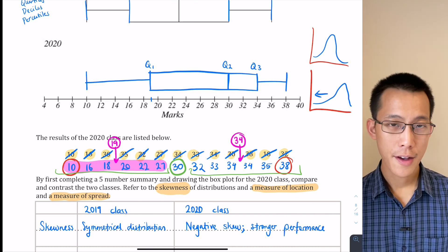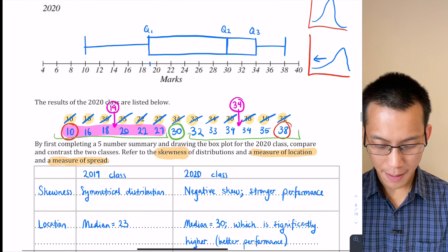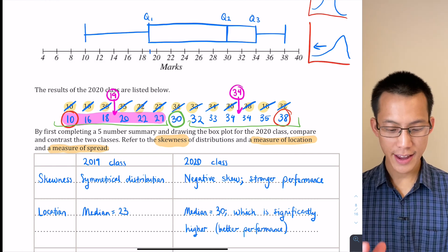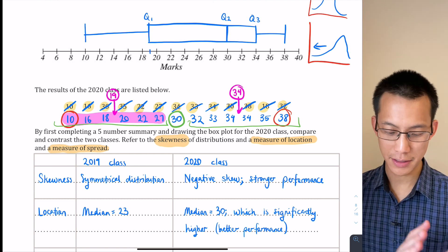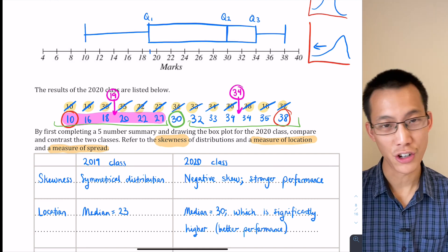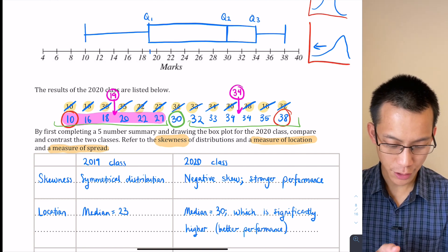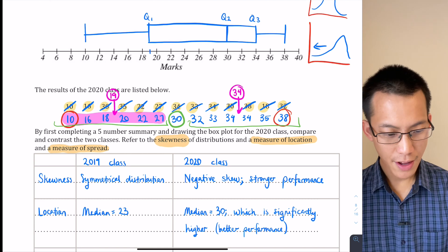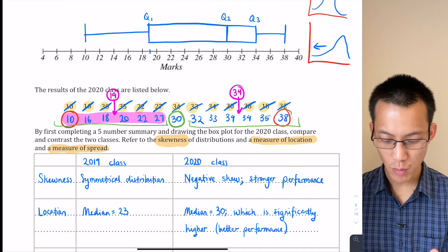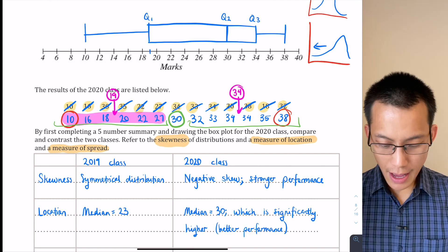I'm going to move down and now I'm going to talk about a measure of location here. So what does location mean? That's talking about where, in terms of the marks, are my marks actually positioned, where are the students positioned. The only measures of location that we have really here are the median—you might use mean, but we haven't got that calculated here. So the median for the 2019 class is 23, and the median for the 2020 class is 30, and that's way up like seven whole marks. So that's why I've written it's significantly higher and there's much better performance there.